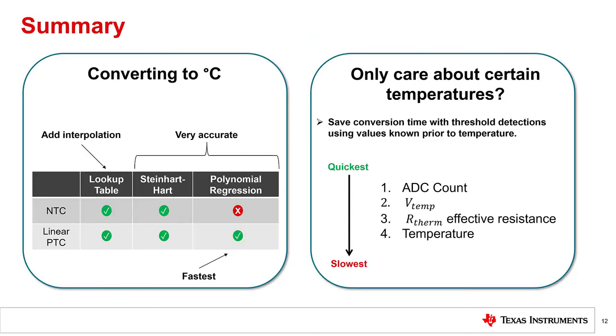To summarize, there are multiple methods to convert the output across a thermistor to a temperature value in software. One of the most common methods is to use a lookup table, which is normally provided by the thermistor manufacturer and comes in either a 1 or 5 degrees Celsius step size.